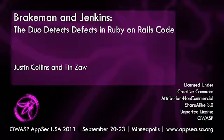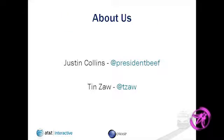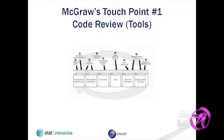Welcome to our talk on Brakeman and Jenkins. We're going to be talking about static analysis for Ruby on Rails. I'm Justin Collins — if you search the internet for President B, you'll find me on many sites. I'm Timzo, and I work with him at an AT&T directive. I've been a software developer for many years but became a security architect in the last three years.